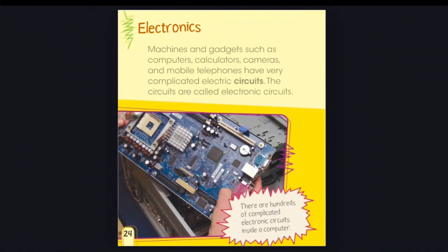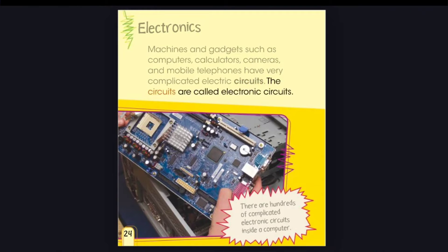Electronics. Machines and gadgets such as computers, calculators, cameras, and mobile phones have very complicated electric circuits. The circuits are called electronic circuits. There are hundreds of complicated electronic circuits inside a computer.